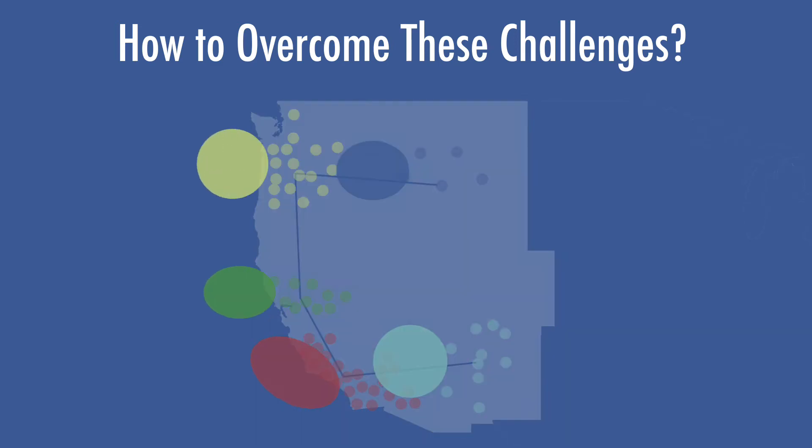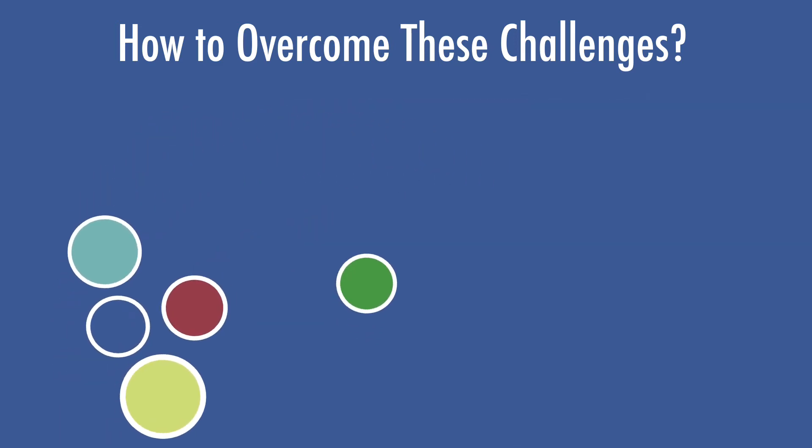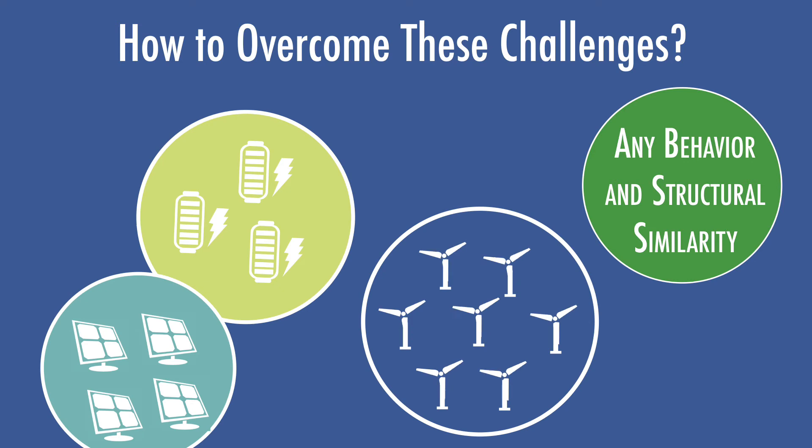The definition of a cluster, however, is not limited to geographical closeness. It can be any structural and behavioral similarity shared by the network nodes. For example, solar panels, wind farms, and batteries can each be considered as individual clusters in a smart grid given their similarities in power generation and consumption.